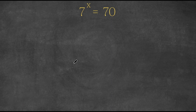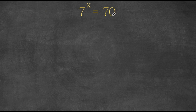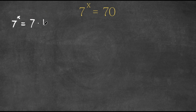Hey guys, welcome back to Click Academics. In today's video, I'm going to be teaching you guys how to solve this exponential equation. So we have seven to the power of x is equal to 70. Now we can first start by converting 70 to seven times 10. So now we have seven to the power of x is equal to seven times 10.